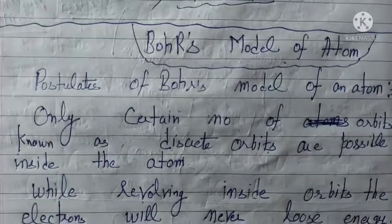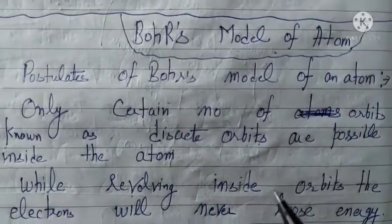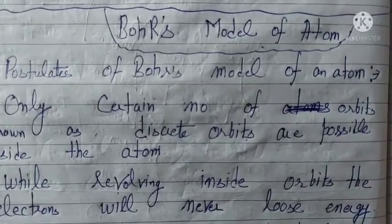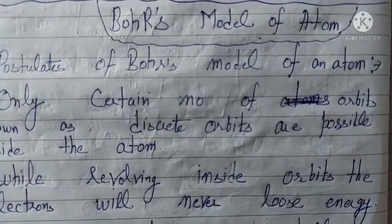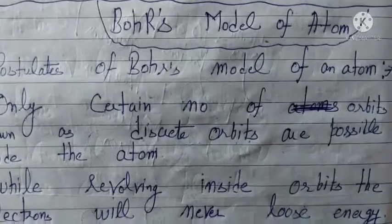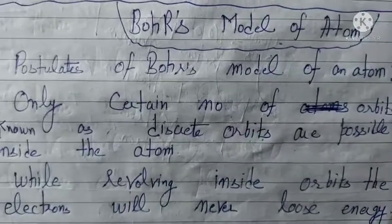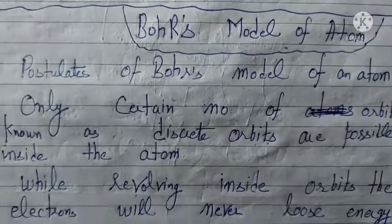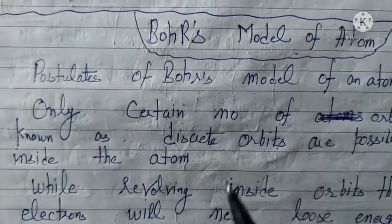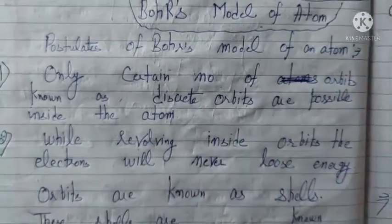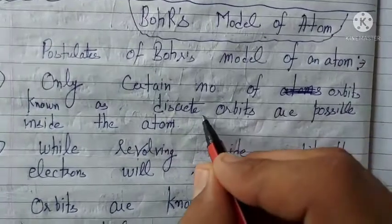Bohr said only a fixed number of orbits are possible for each atom. For example, hydrogen will have a certain number of orbits, oxygen will have a certain number of orbits, and these orbits are known as discrete orbits. So the first point given by Bohr is that only certain number of orbits are possible for each atom, and these orbits are known as discrete orbits.